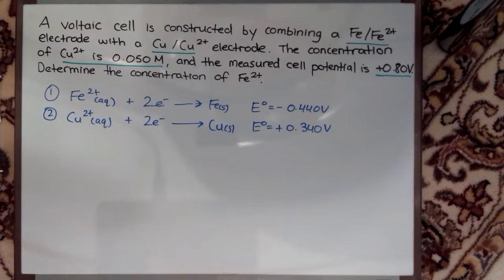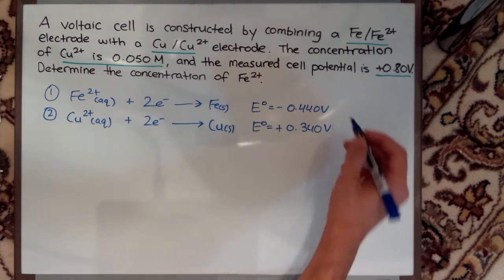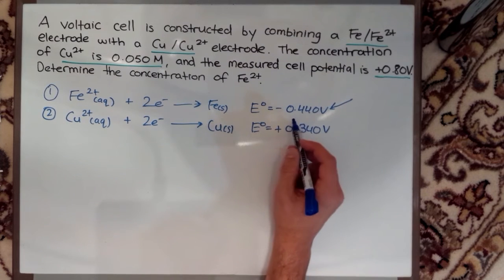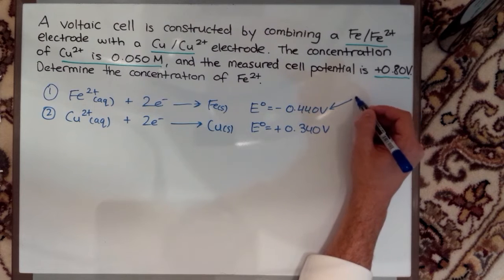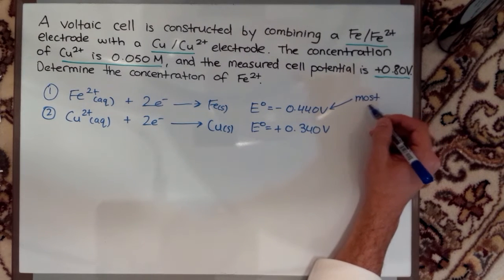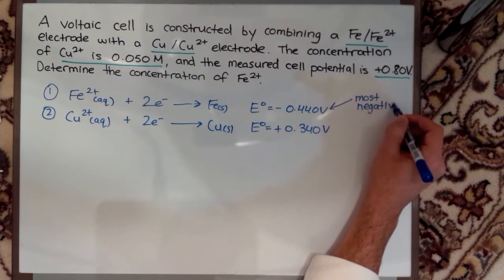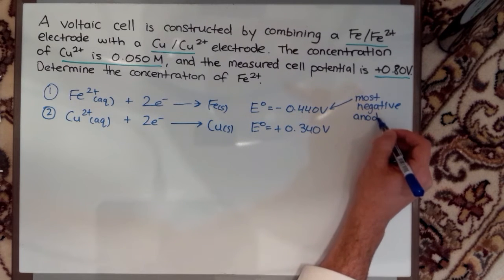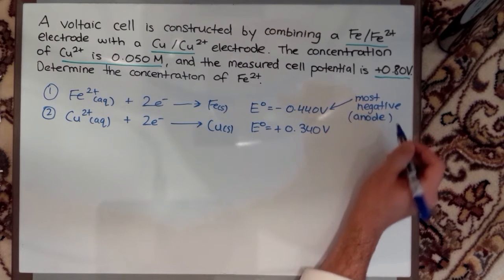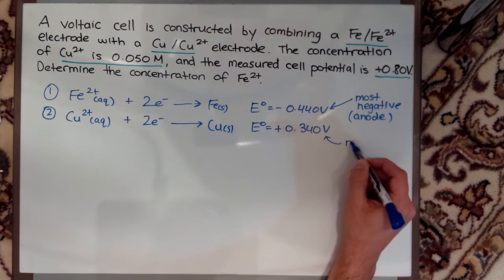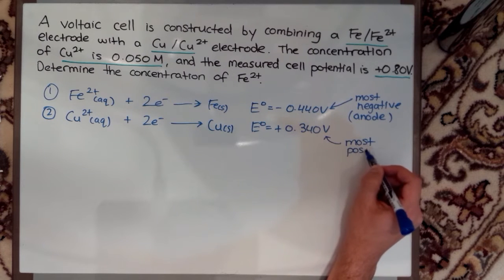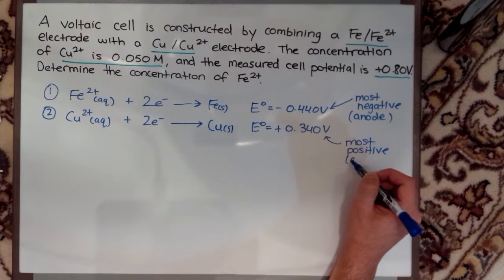Now these are written as reduction potentials which means they're not written as they would occur. They're written as just reductions. When I've written them as reductions straight from the table, my most negative reduction potential is my anode reaction and my most positive is my cathode reaction.